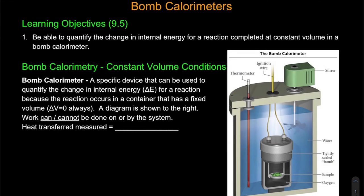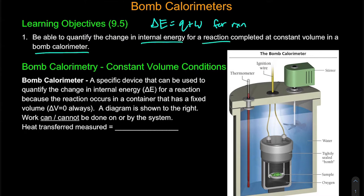In previous videos we've looked at how our change in internal energy can be expressed in two forms — heat and work — for a reaction. Now in this example we're going to look specifically at what we call a bomb calorimeter and why we may use this specific instrument in order to quantify change in internal energy for our reaction when we do this in a bomb calorimeter.